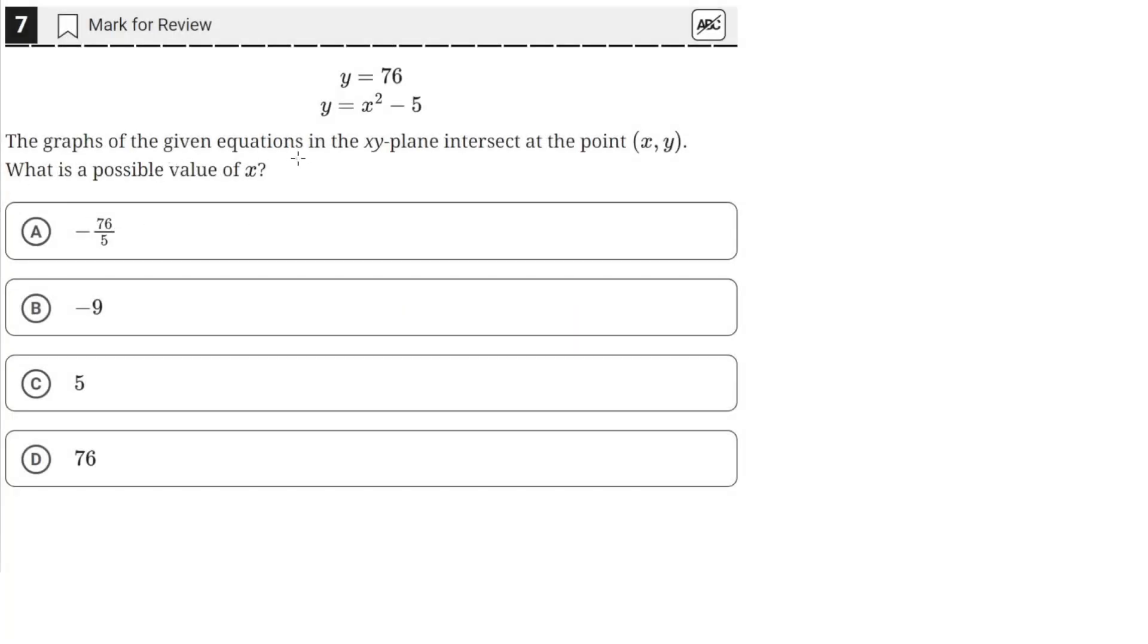The graphs of the given equations in the xy-plane intersect at a point (x, y). What is a possible value of x? Okay, so we have these two functions: y equals 76 and y equals x squared minus 5.